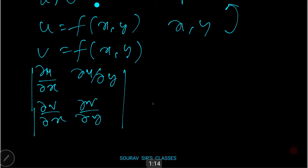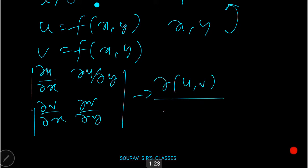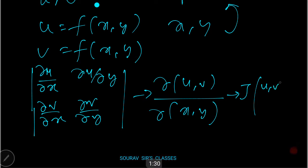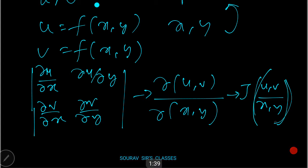This is the normal 2×2 Jacobian form. It can also be written as ∂(u,v)/∂(x,y), or simply J(u,v; x,y). A common mistake is using two different brackets, but it should actually be a single common bracket.